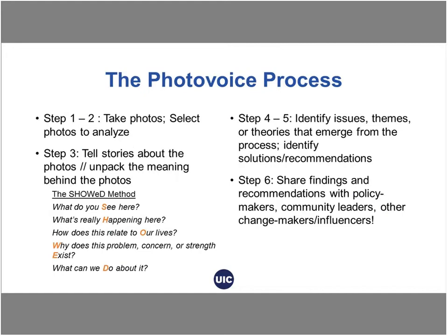The Photovoice process is laid out here in about six steps. The process is iterative and different depending on the needs of the people involved. The typical first two steps are to take photos and then select photos to analyze. A group of researchers — consisting of community members and academic researchers — may go out and take pictures exploring, say, homelessness in their community. They might take dozens of pictures each, but then the group comes back together and selects just a few from that session to dig deeper. The people who took the photos will tell the story about what that photo means to them or why they chose to take it, and then in a group setting, everyone will talk about the meaning behind these photos.